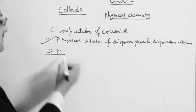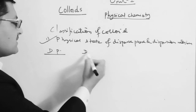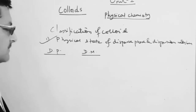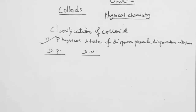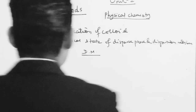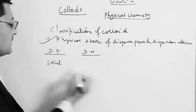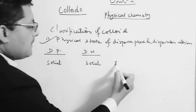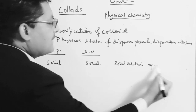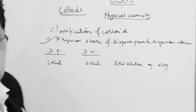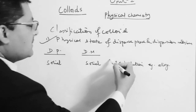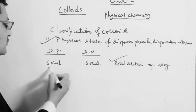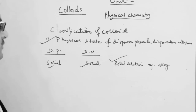Dispersed phase (DP) and dispersion medium — when dispersed phase is solid and dispersion medium is solid, this is called a solid solution. An example is an alloy group — this is a metal solid solution. When dispersed phase is solid and dispersion medium is liquid, this is called sol.